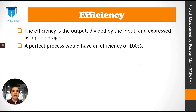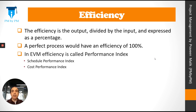Let's now look at efficiency. Efficiency is output divided by input, expressed as a percentage. A perfect process would have an efficiency of 100%. In EVM, efficiency is called performance index. There are two performance indices: the schedule performance index and the cost performance index.